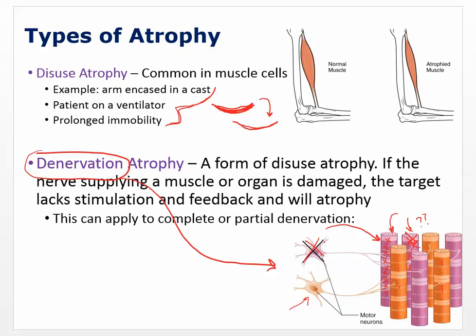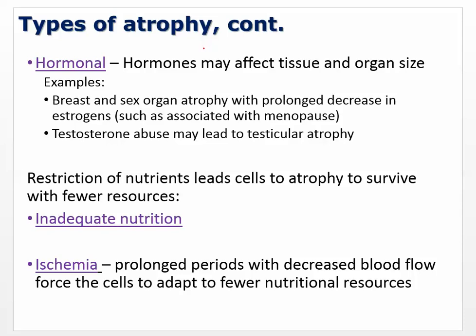Other causes of atrophy include hormonal factors. Hormones may affect tissue and organ size. For example, breast and sex organ atrophy happens with menopause — any limitation in hormones like estrogen and progesterone that build up tissue can cause atrophy. Vaginal atrophy and breast atrophy happen when estrogen levels decrease. Testosterone abuse may lead to testicular atrophy, because exogenous testosterone does the job of the cells in the testes, so the Leydig cells stop producing it and the testes shrink.